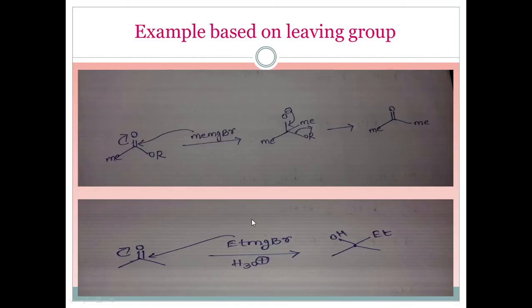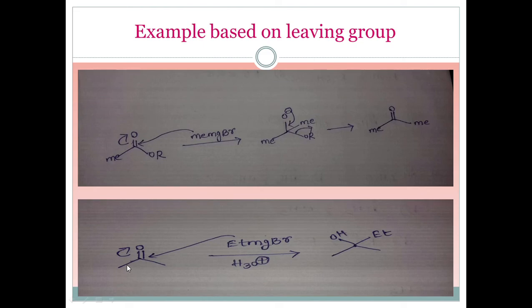Now here is a question based on these concepts. There is a carbonyl group with RMgX. Magnesium carries a positive charge, and the carbon carries a negative charge, giving an electron. This bond gets pushed up with a negative charge, which is then pushed further, and the better leaving group leaves. It is replaced by methyl, and we get the product. Here, OR⁻ can become a better leaving group and leaves because it forms a stable anion, making a stable product.